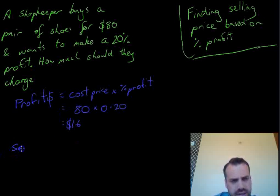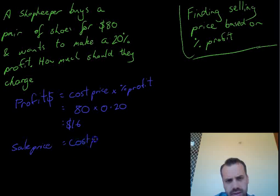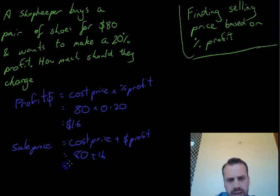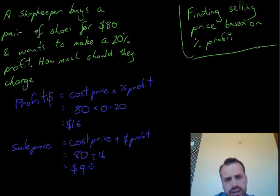Now, we can figure out our sale price pretty simply. That's going to be the cost price plus the dollar profit. So in this case our cost price was $80, that's how much we paid for the shoes. Now we want a profit of $16. So that means that on our price sticker, we better put $96.